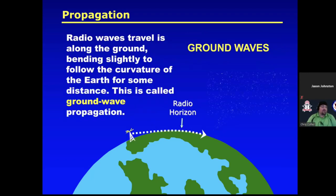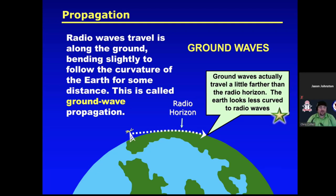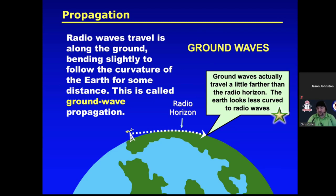Radio waves traveling along the ground, bending slightly to follow the curvature of the Earth, is called ground wave. Ground wave actually travels a little farther than the radial horizon. It can go quite a bit further depending on conditions — past line of sight, past the radial horizon.